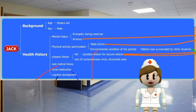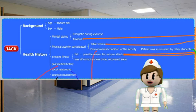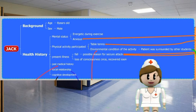For background, Jack is 8 years old and he is a boy. For his health history, it is divided into six parts. The first part is mental status, indicating his anxiety because he got an unexpected seizure attack while playing table tennis. Talking about his present illness, he fell accidentally and lost consciousness once but recovered soon. We may also find out information about his past medical history, social relationship, and cognitive development in the assessment part.